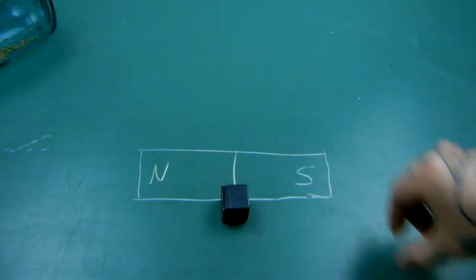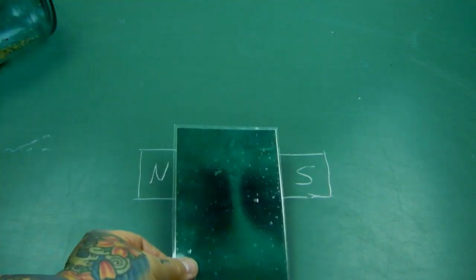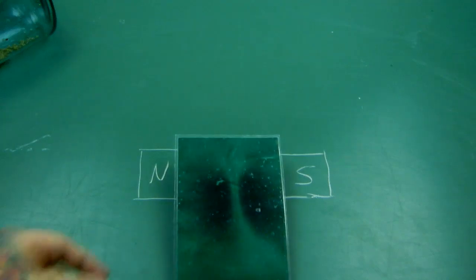Here we have a neodymium iron boron, one inch by one inch cube. A magnet does not have poles at all. Anybody that actually knows much about magnets will tell you one thing, that there is no such thing as a north pole and a south pole in a magnet. What does that mean?